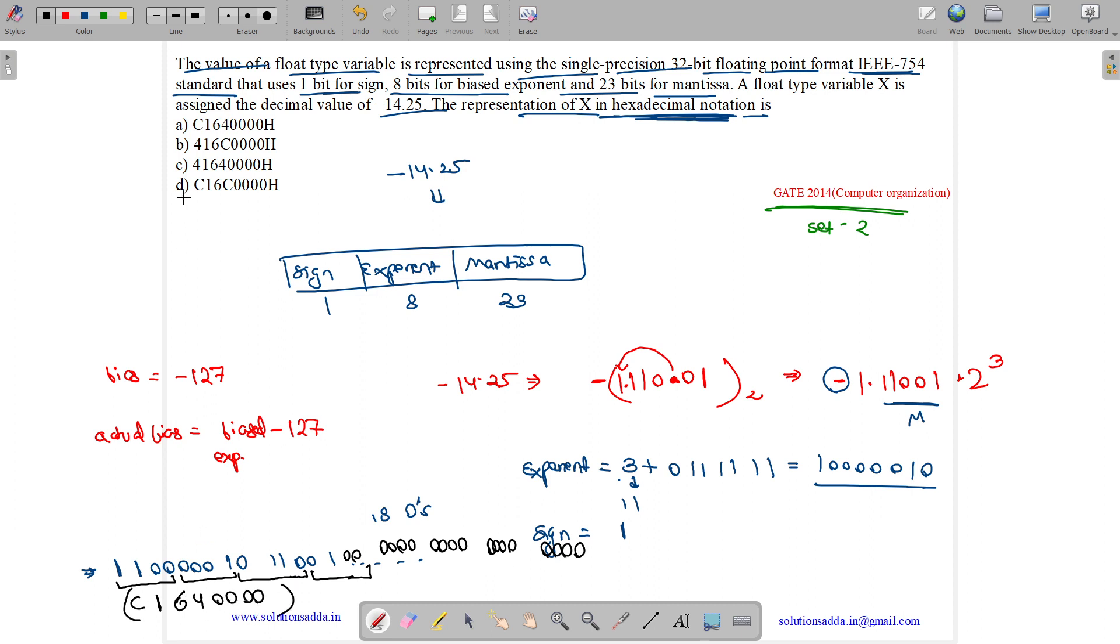All these will have 0000. So this is our representation. It is C1640000H. And H is used specifying that it is a hexadecimal notation. So correct answer is option A.